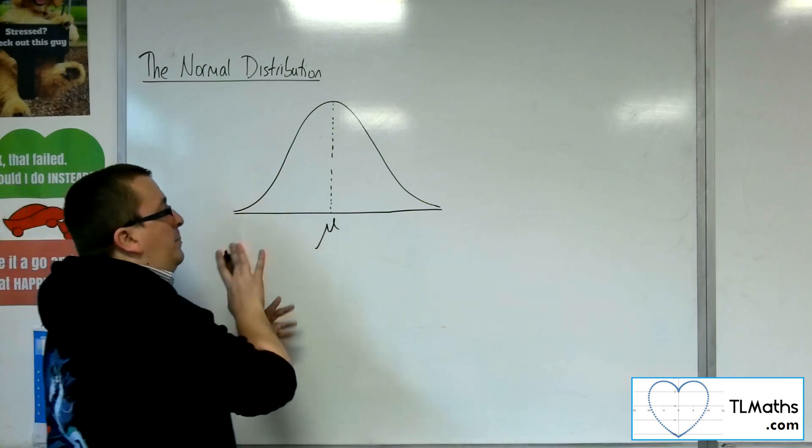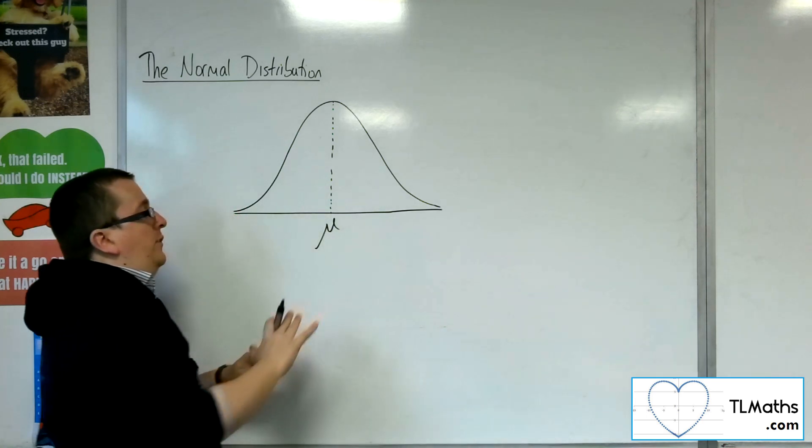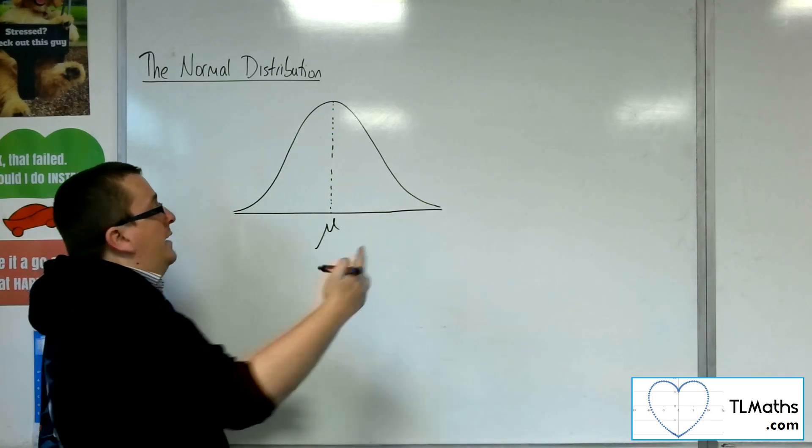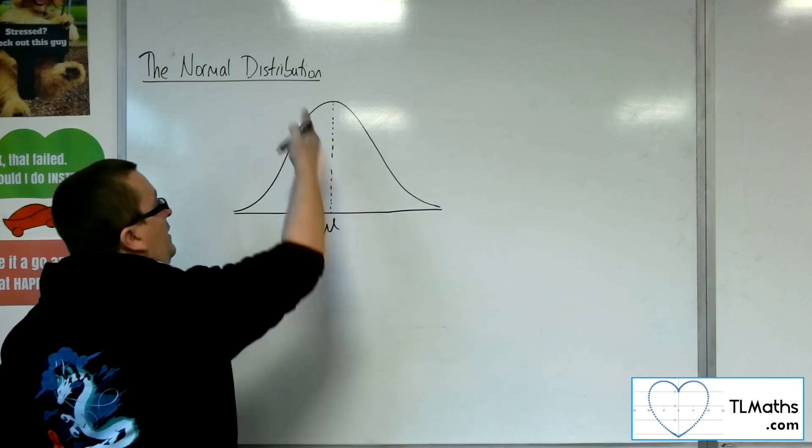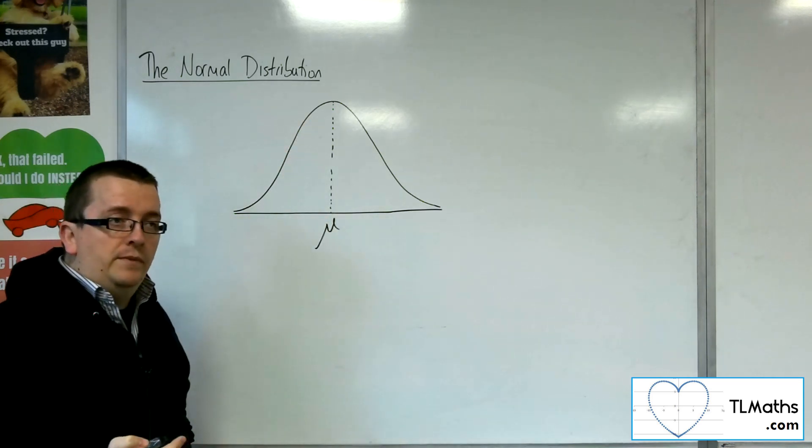Okay, so 50% is above the mean, and 50% is below the mean. Okay, so the mean, the mu, splits this distribution completely in half.